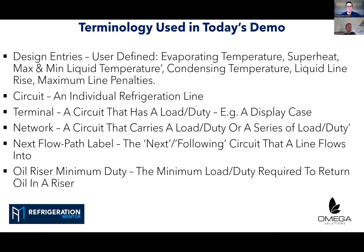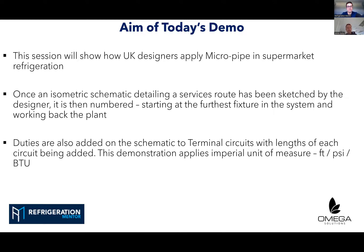We number up from the isometric. If it's circuit one, circuit one may go into number two, three, four, or five — but it's sequential, and the software flags it if you try to label more than two circuit numbers as your next flow label. For suction line oil risers, it allows us to put in minimum duty for oil return — a really cool feature so we don't oversize those risers, which can cause a lot of problems in winter or summer months if the riser is too small, resulting in excessive line losses and penalties.